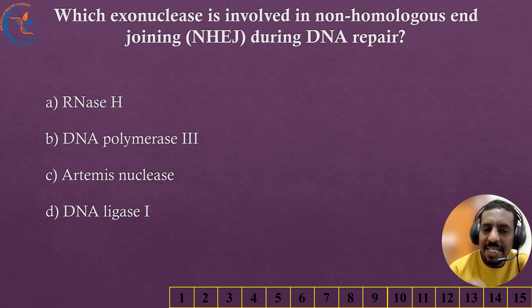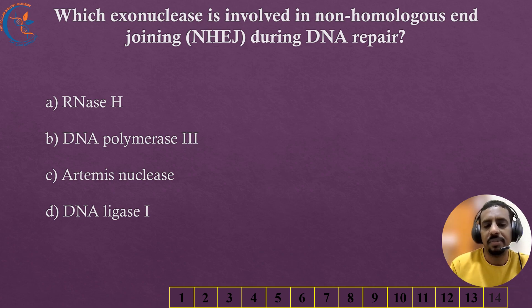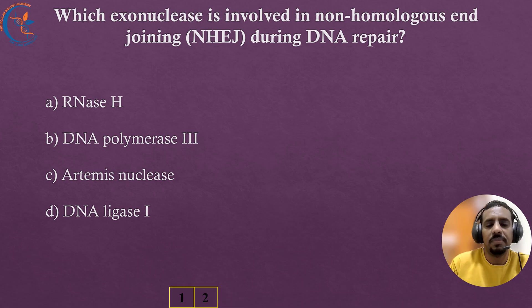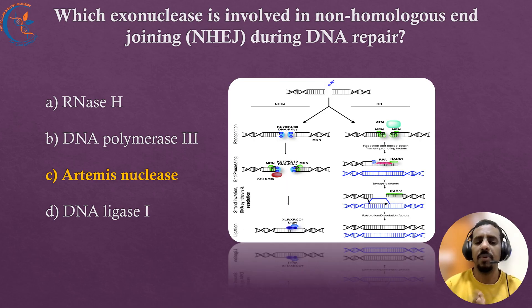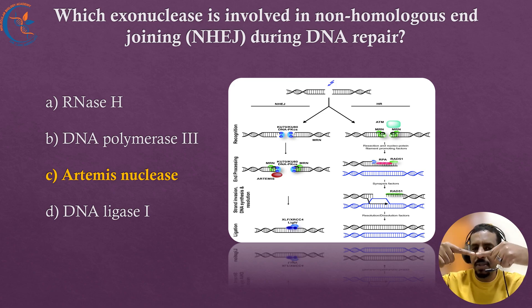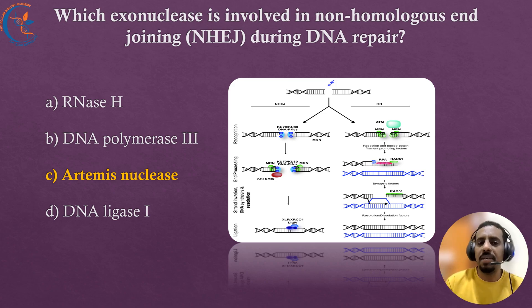Which exonuclease is involved in non-homologous end joining during DNA repair? The correct answer is Artemis nuclease. Artemis nuclease plays a key role in non-homologous end joining by modifying DNA ends, making them suitable for joining together. This helps repair DNA breaks, especially in processes like immune system development.